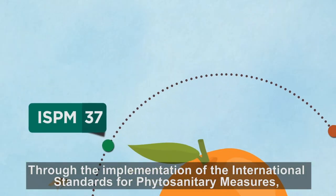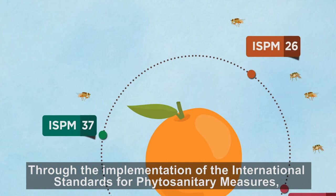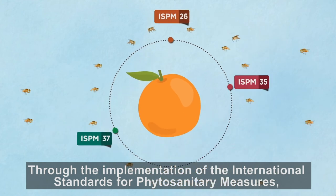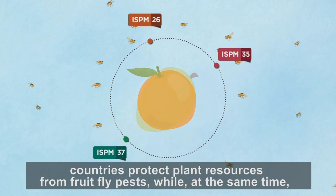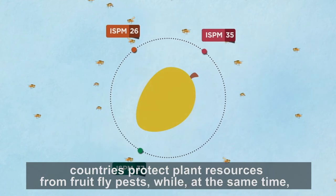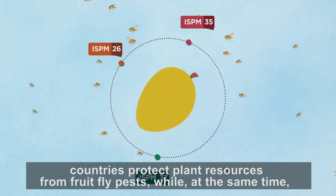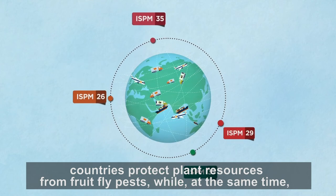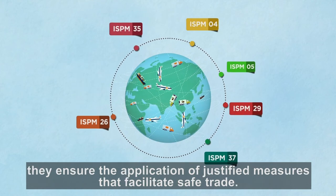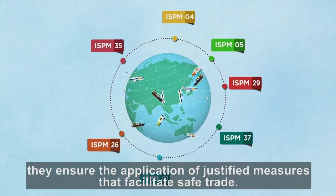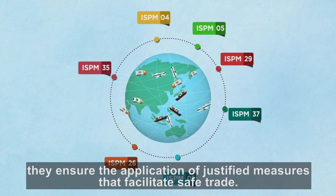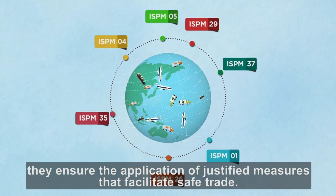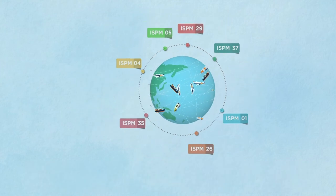Through the implementation of the international standards for phytosanitary measures, countries protect plant resources from fruit fly pests while, at the same time, they ensure the application of justified measures that facilitate safe trade.